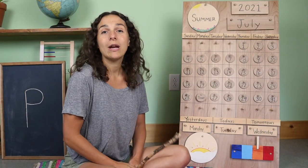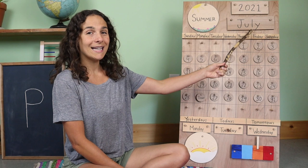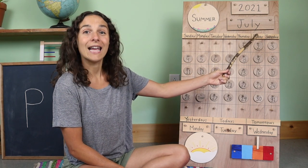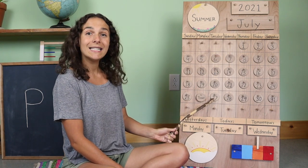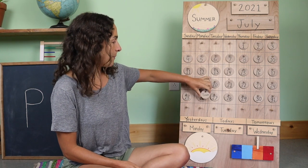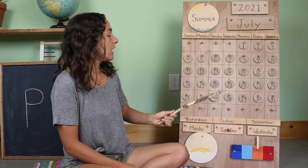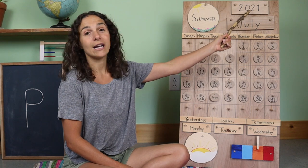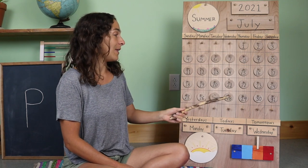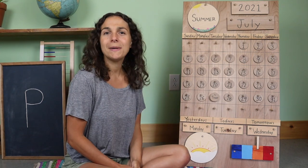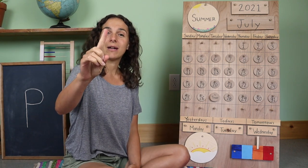I have my pointing stick and we are going to go over the date. The month is right up here — do you know what the month is? July. That's right, the month is July, and today is July 27th. Let's move the chip over from yesterday. Yesterday was July 26th, today is July 27th, and the year is 2021. So the month is coming to an end. I wonder how many days are left in the month of July. Let's use our counting fingers and give them a little stretch.